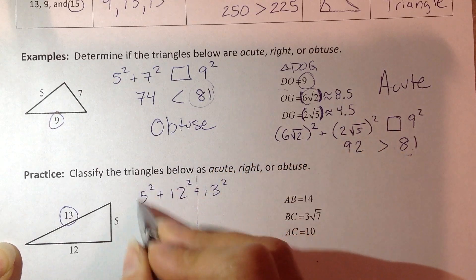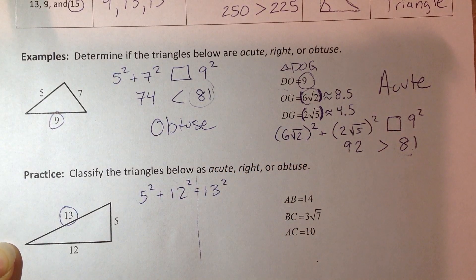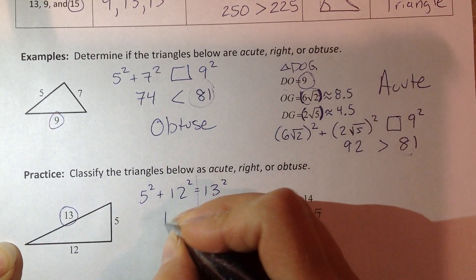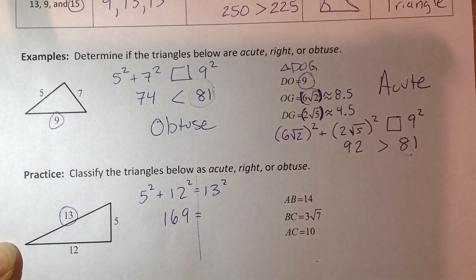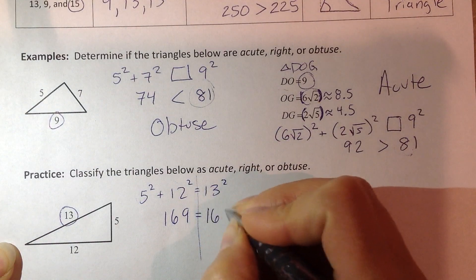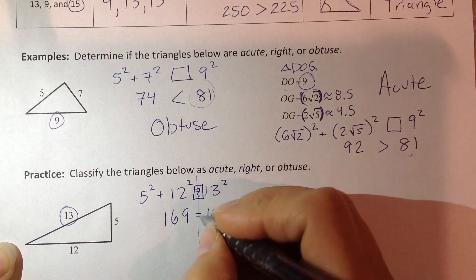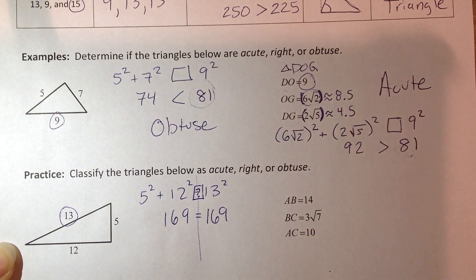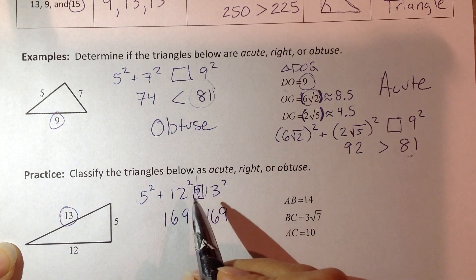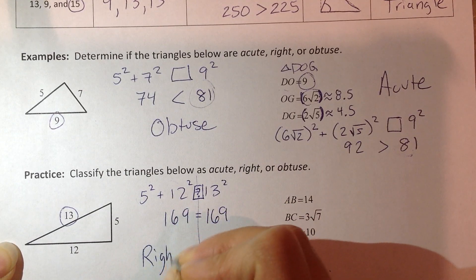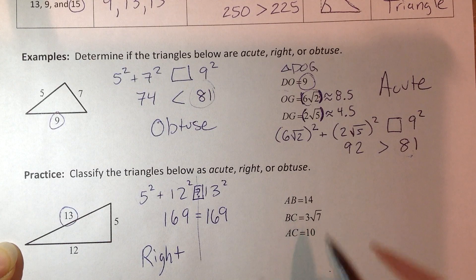I'm going to put all this in my calculator since it's on one side. I'm going to get 169. 13 squared is 169. How did I know that was going to be equal? It's actually a Pythagorean triple, so I did know it was going to be equal. So they turned out to be equal, so I'm going to go ahead and that's my easy one. I know that's going to be a right triangle.